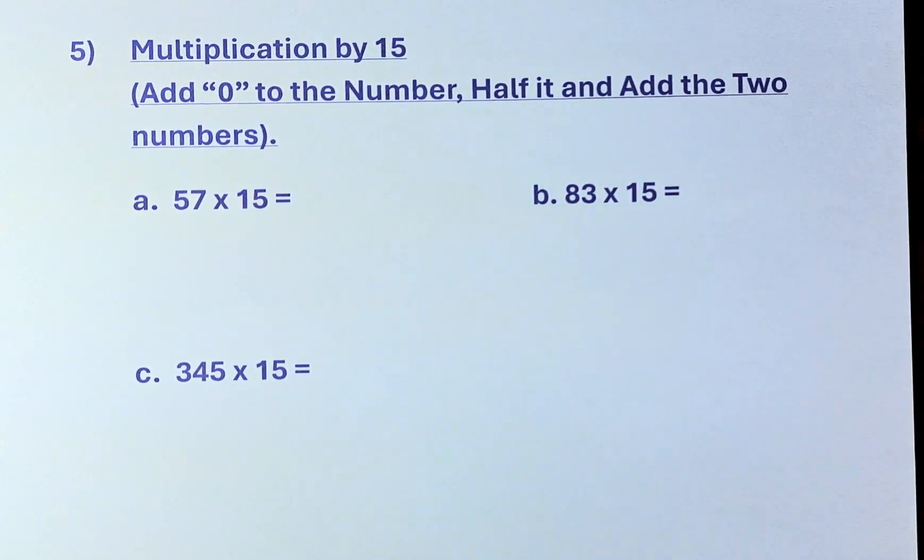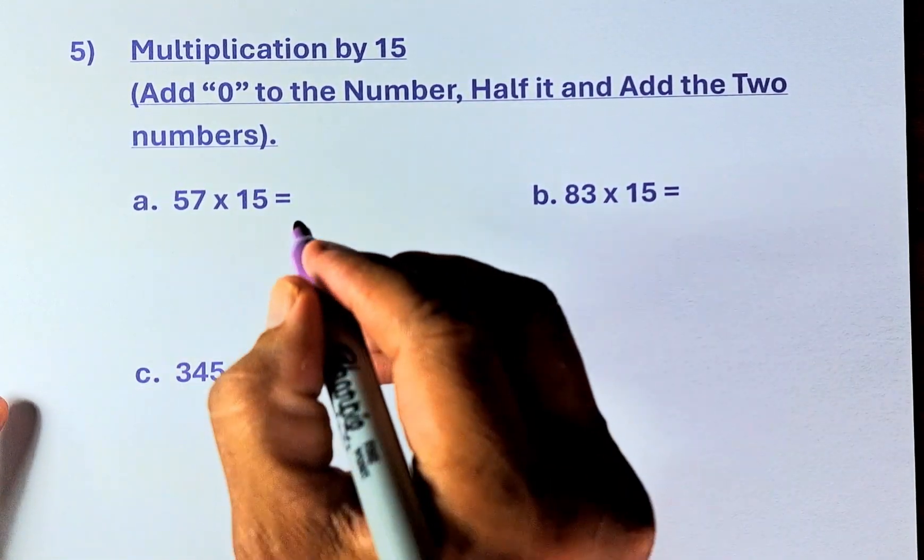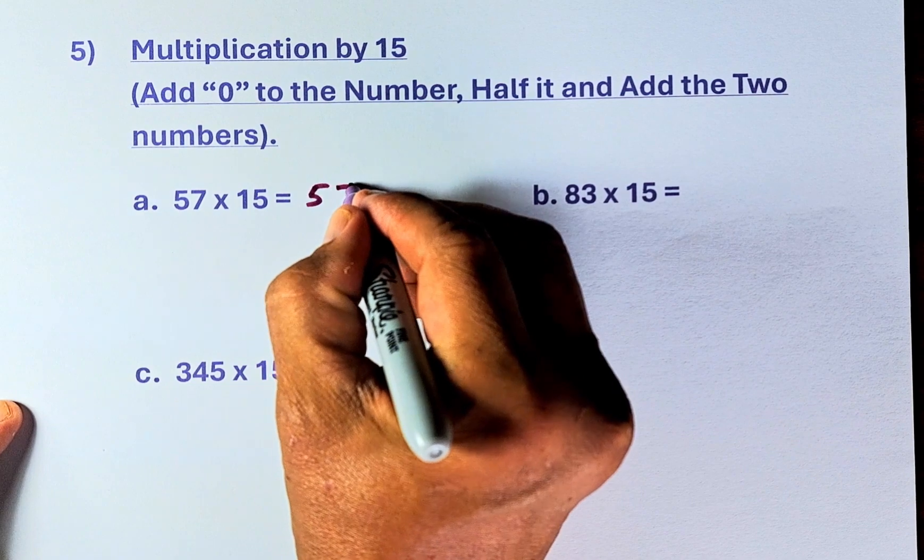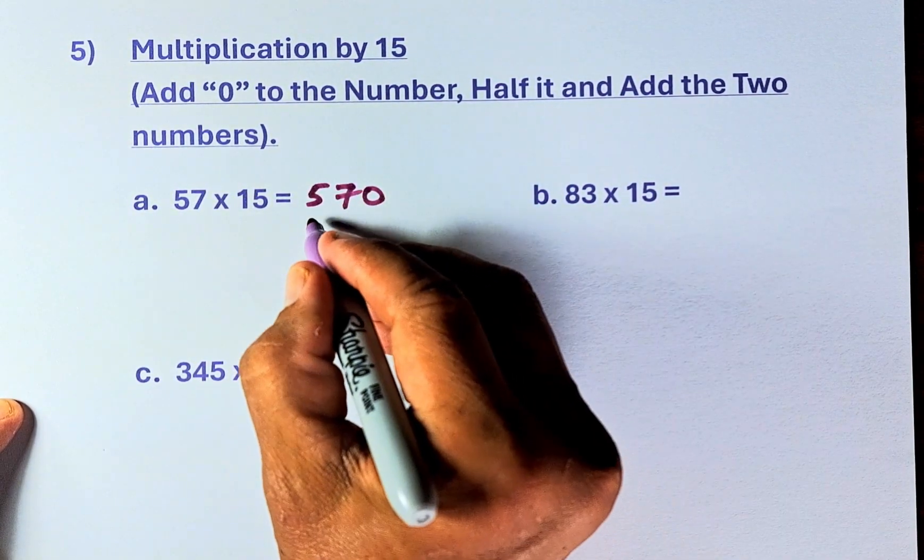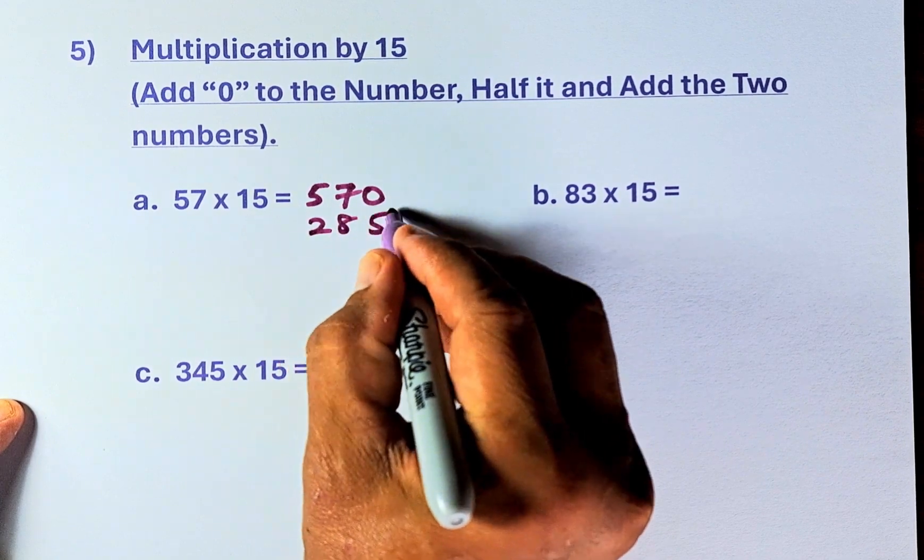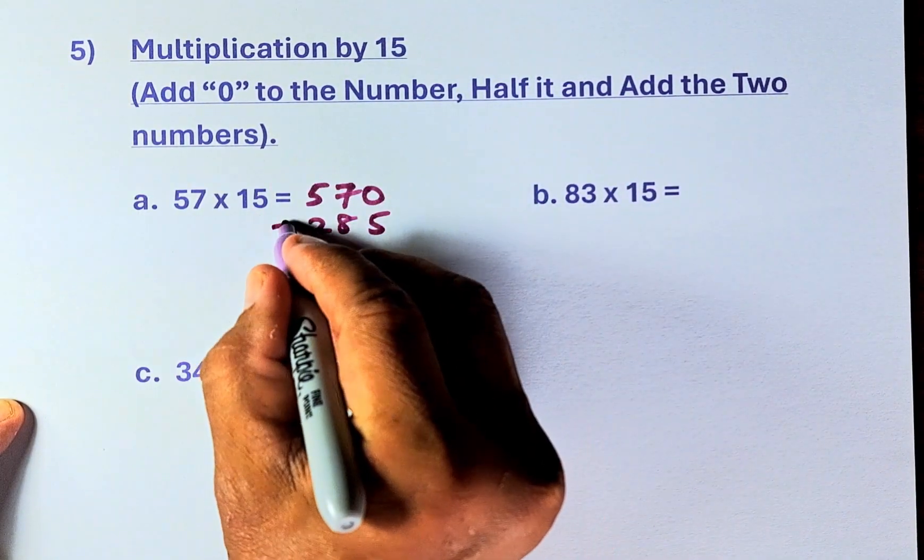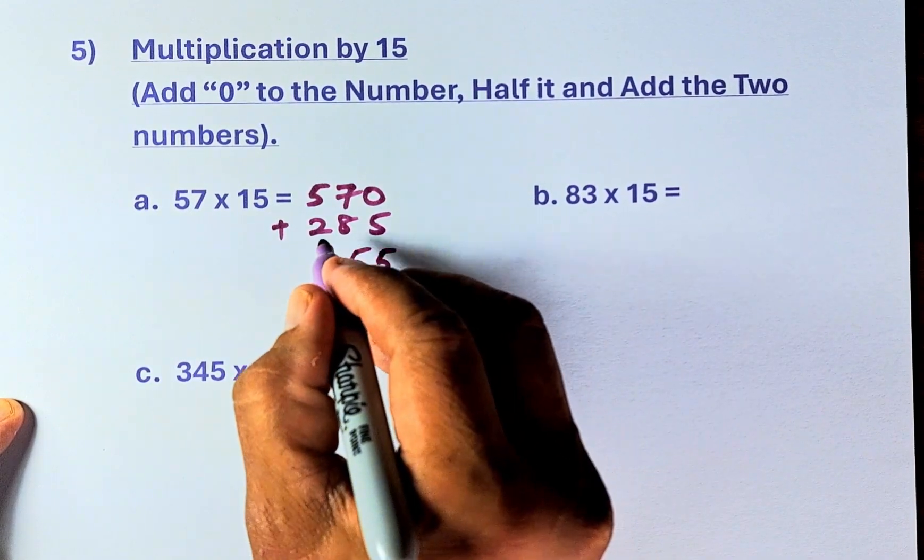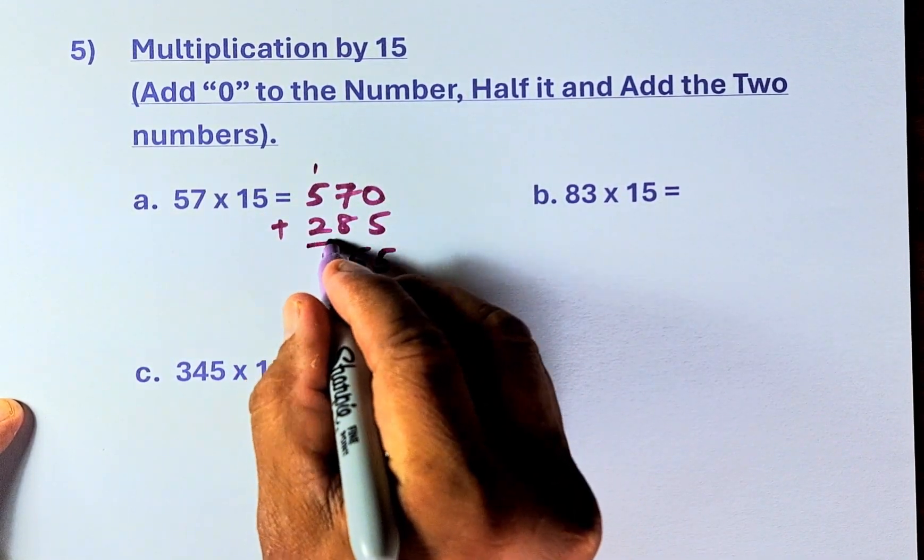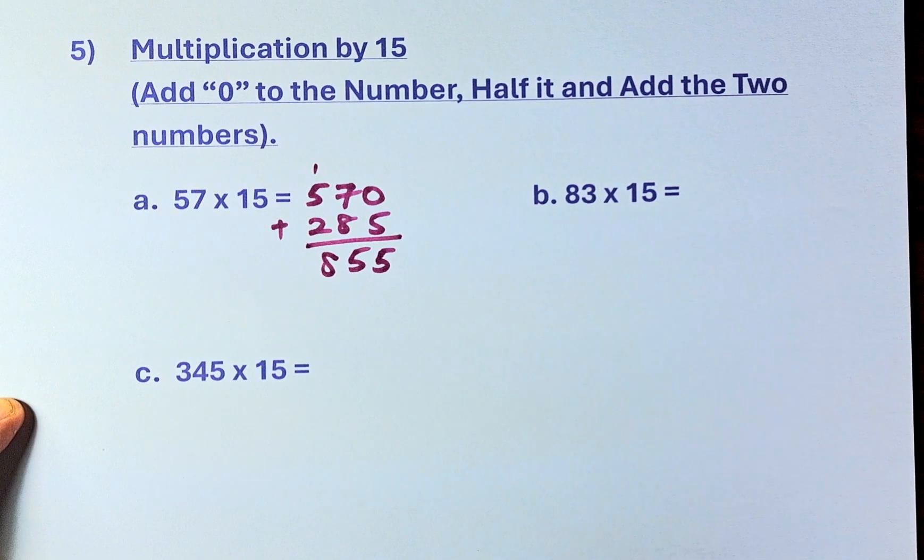So what happens, 57 times 15 becomes 570, and then you half it. When you half it, it becomes 285, and don't forget, add the 2 numbers, you add them up, and the answer is going to be 5, 15, carry up 1, is 855. Awesome, right?